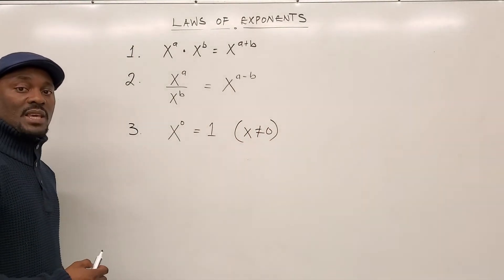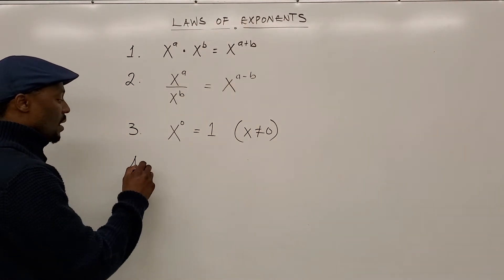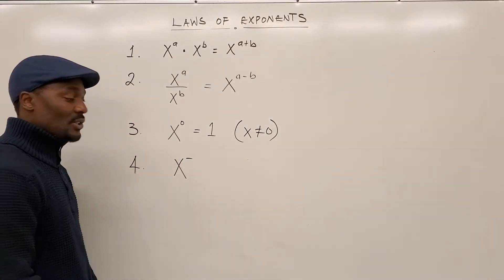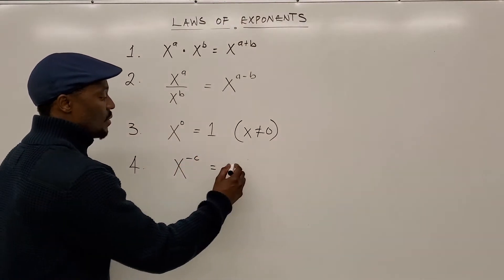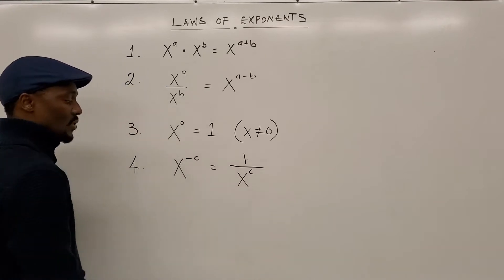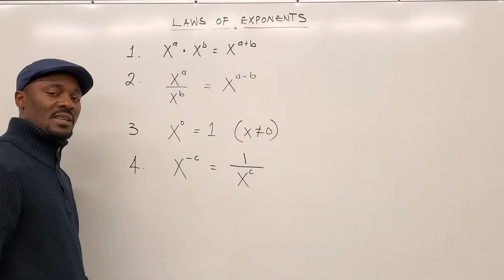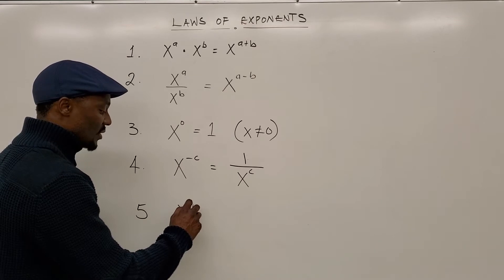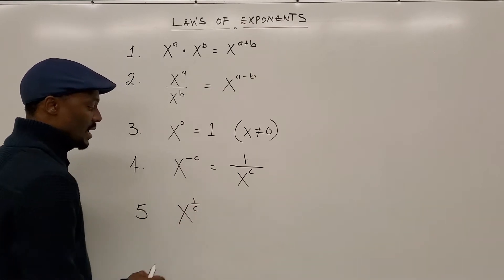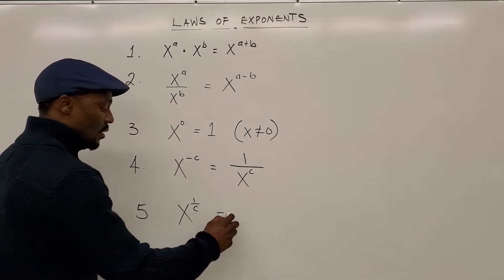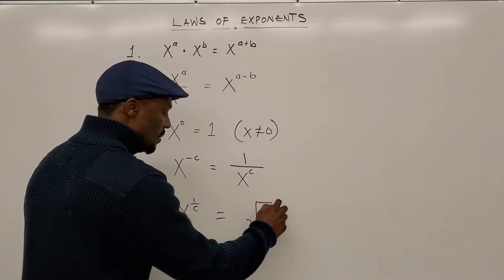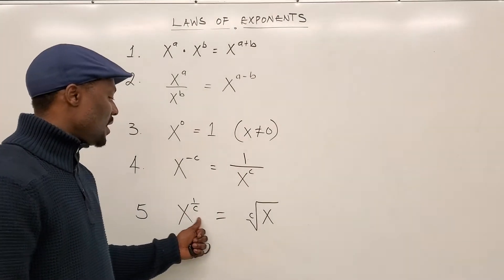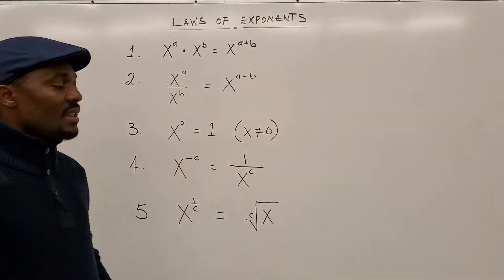I explained why x cannot be zero — that's the only exception. Then number four: x raised to a negative exponent, x raised to power negative c, equals 1 over x to the power of c. This c could be 1, 2, 3, or anything. And then number five tells us that x to the power of a fraction — say 1 over c — gives us the c-th root of x. If c is 2 it's the square root, if c is 3 it's the cube root, if c is 4 it's the fourth root. Those are the five we already explained.